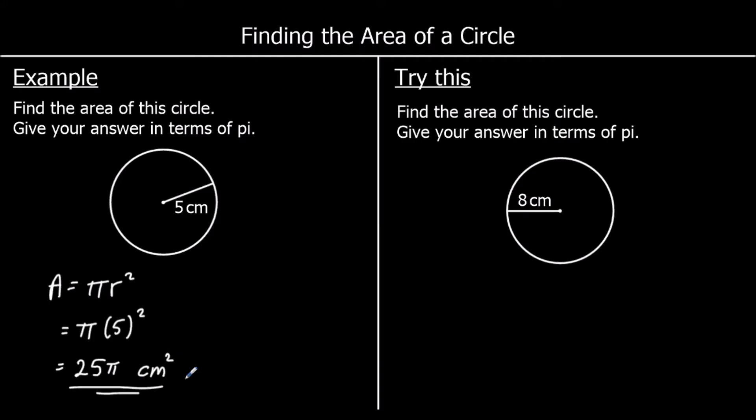If we wanted to give a decimal answer, we could type it into the calculator. But this question says give your answer in terms of pi, so the answer is 25 pi. Okay, one for you to try — give this one a go.